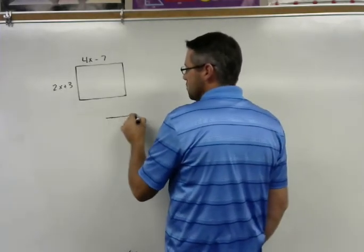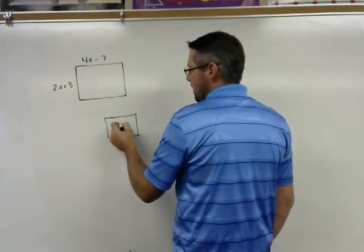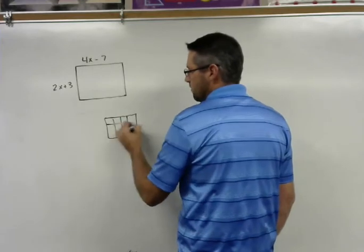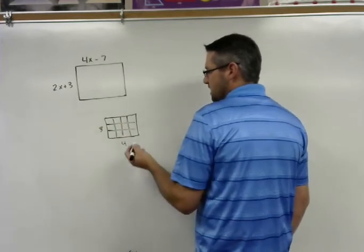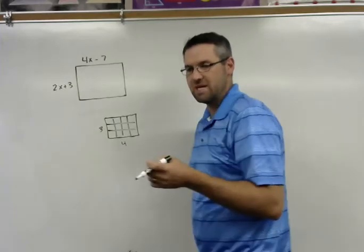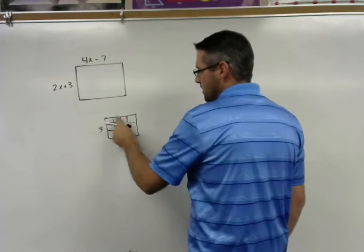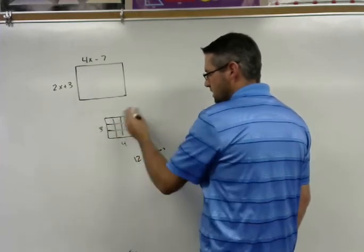Now, if we think back to what area means, if I have a rectangle that is 4 squares wide and 3 squares tall, then we would say that the area, remember area is the amount of space inside an object, so we would say that we have 12 squares in this rectangle.